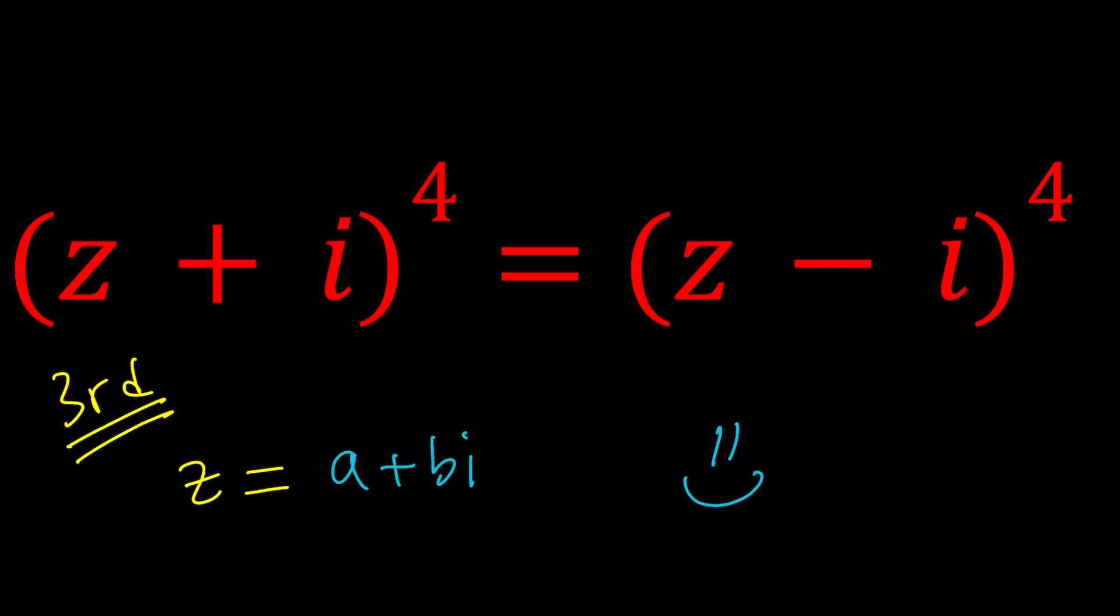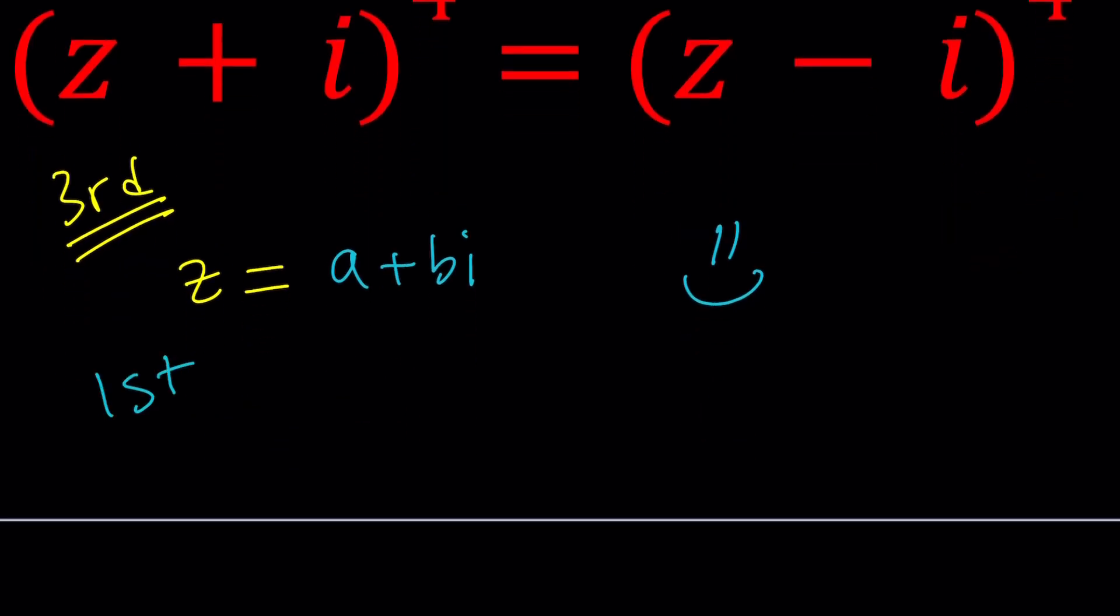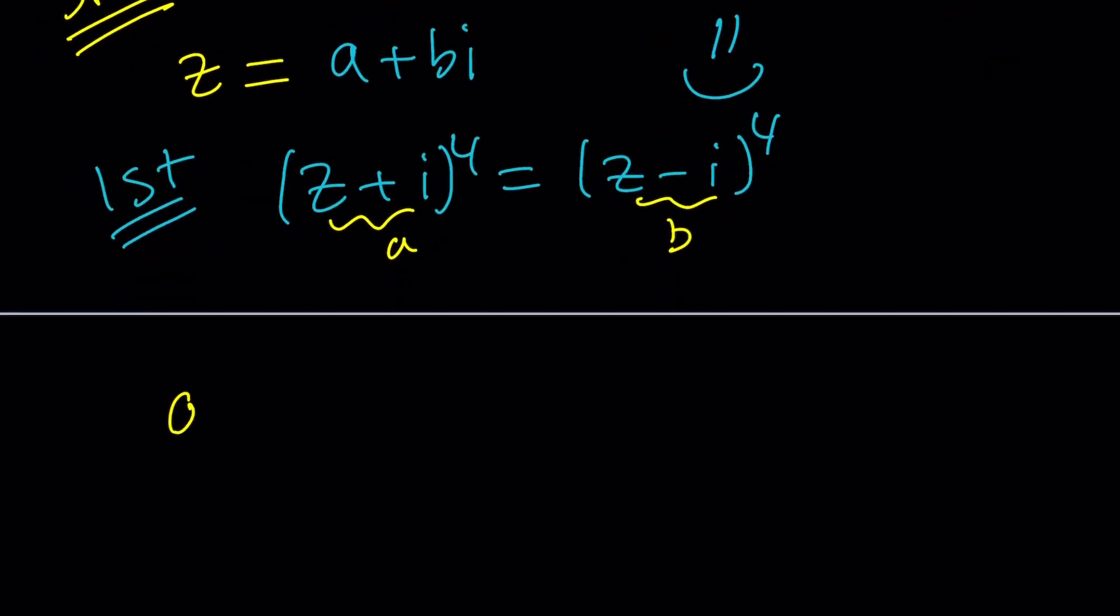So let's go ahead and jump to the first method. So it's going to be like 3, 1, 2. For my first method, I am going to use substitution. Z plus I to the fourth power is the same as Z minus I to the fourth power. Let's call this A and let's call this B.